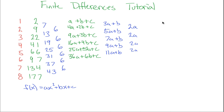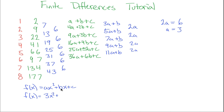This constant 2A corresponds with the constant 6 from the original differences, so 2A must equal 6, which means A equals 3. That is the leading coefficient of our polynomial.